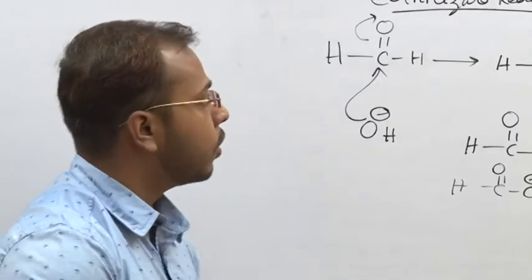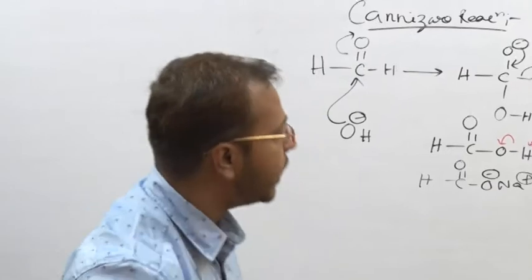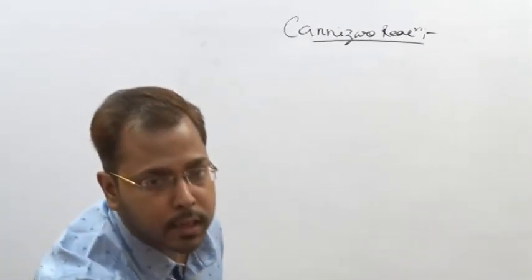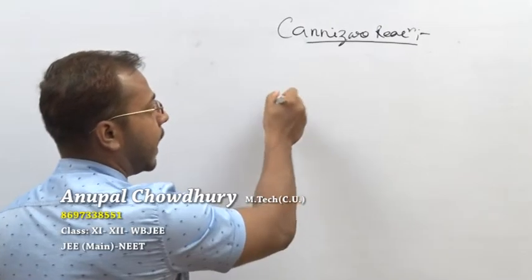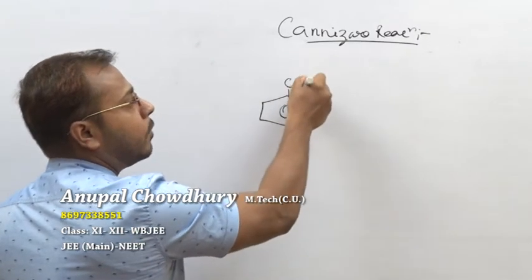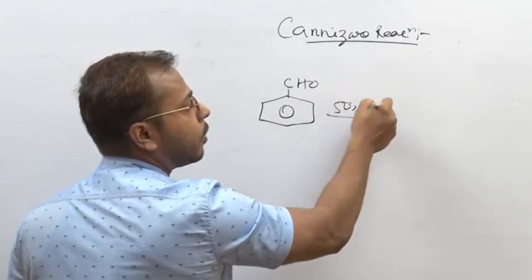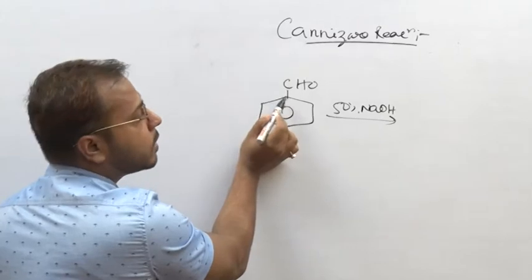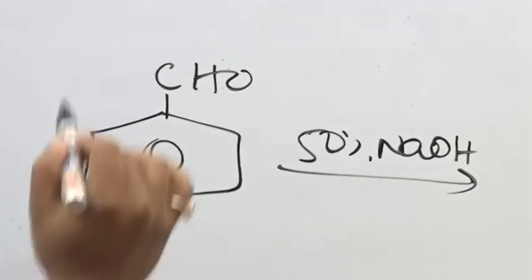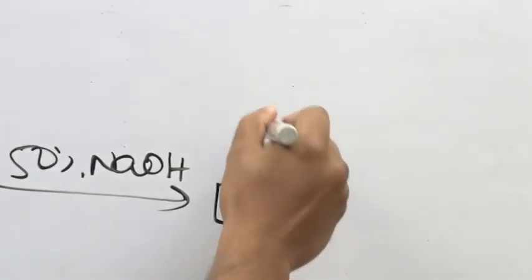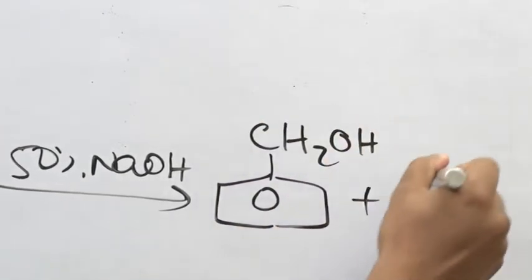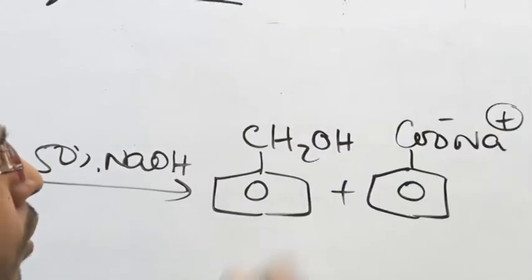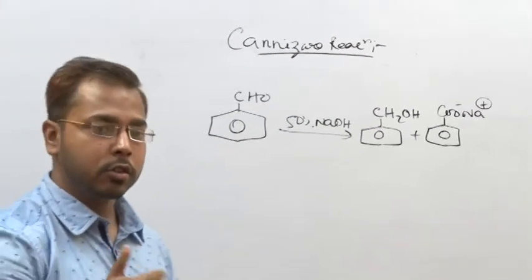Similarly, we can predict the product when we add 50% NaOH or KOH to benzaldehyde. Benzaldehyde does not contain any alpha hydrogens — it has alpha carbons but those carbons have fulfilled all four bonds. So one molecule will be reduced to benzyl alcohol and another molecule will be oxidized to sodium benzoate. The mechanism is similar to the previous one.